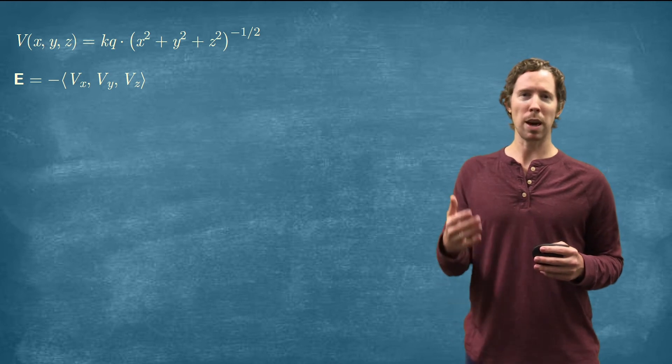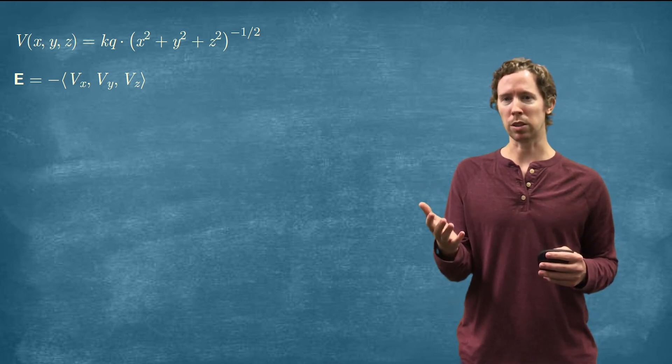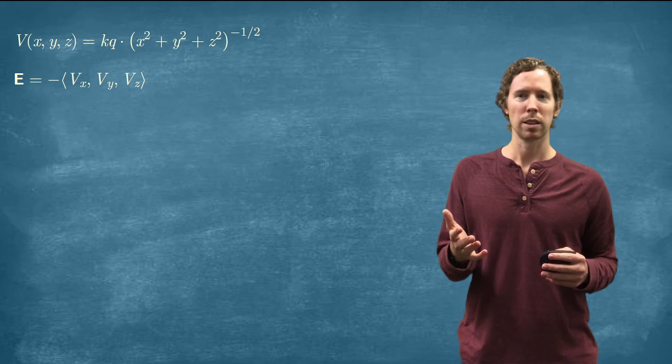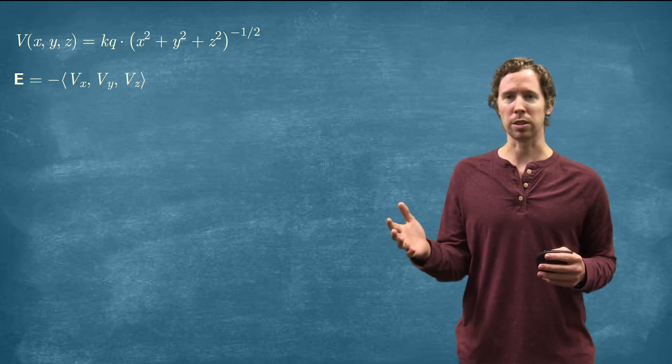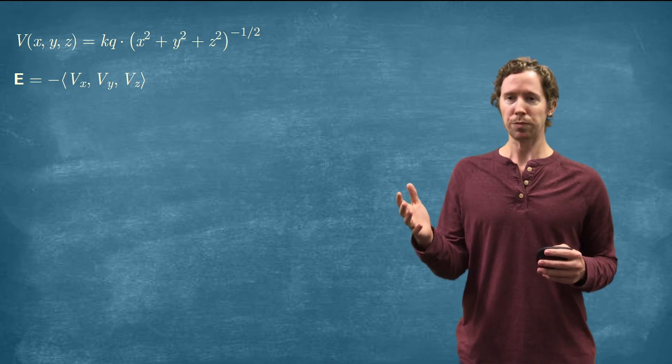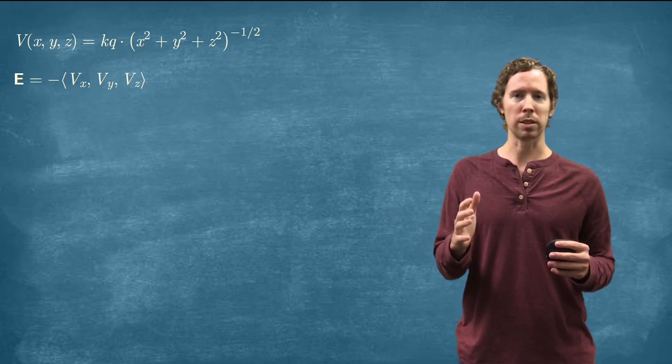So if we think about taking the partial derivative of this electric potential function with respect to X, the K times Q can stay out in front. That's just a constant. And then we'll use the chain rule on that part in parentheses raised to the power.